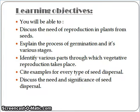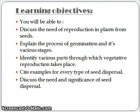Learning Objectives: You will be able to discuss the need of reproduction in plants from seeds, explain the process of germination and its various stages, identify various parts through which vegetative reproduction takes place, and cite examples for every type of seed dispersal, as well as discuss the need and significance of seed dispersal.